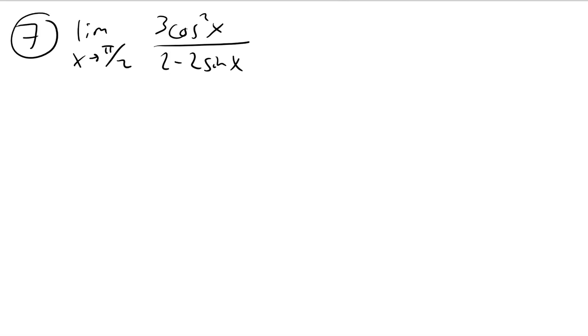All right, with question 7, if we start off with direct substitution, if we try to plug this in, the cosine at pi over 2 is 0, so all of that goes to 0.